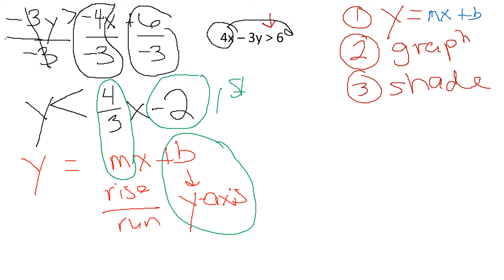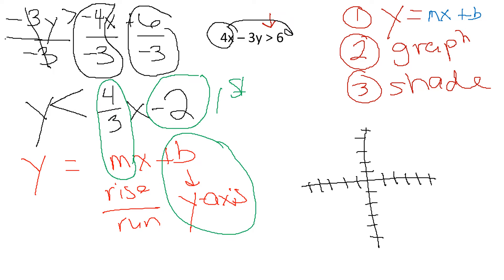Always plot your B first. I'm going to make a quick, not-to-scale graph. I'm going to plot my B first — in this case, B is negative 2, crossing the Y axis. Y goes up and down, so negative 1, negative 2. From the B, I am going to rise over run. If it is positive, I rise up; if it is negative, I rise down. My rise here is 4, so from B I go up 1, 2, 3, 4. Run 3: 1, 2, 3. You always run right.